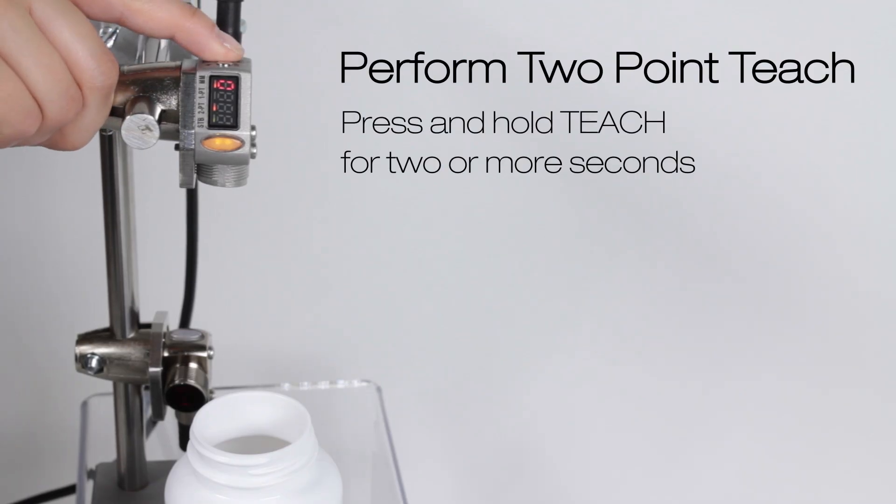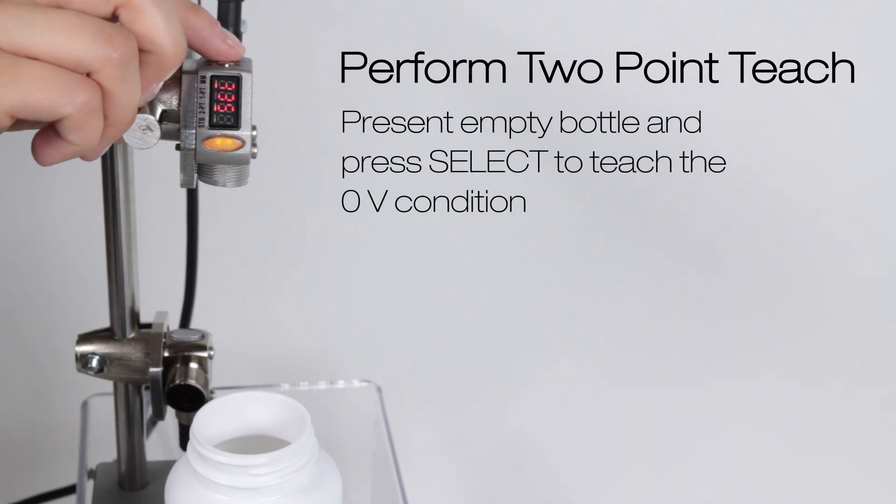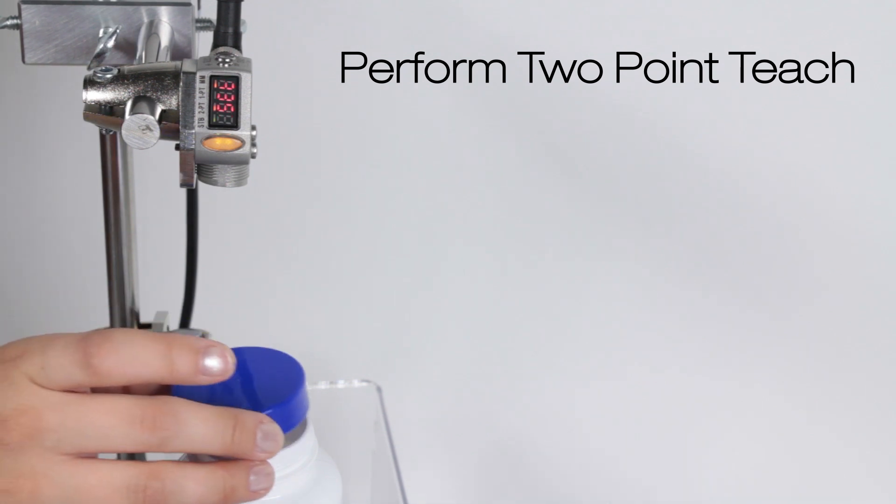To program the sensor in two-point teach mode, hold the teach button for two or more seconds. Set zero-volt flashes, present an empty bottle as the zero-volt condition, and press select.